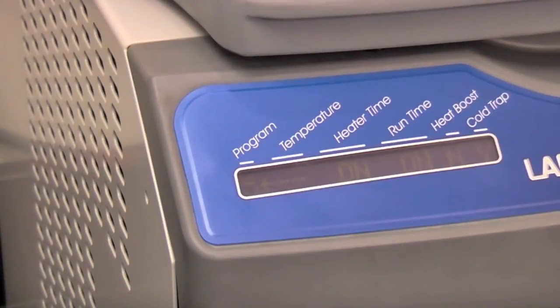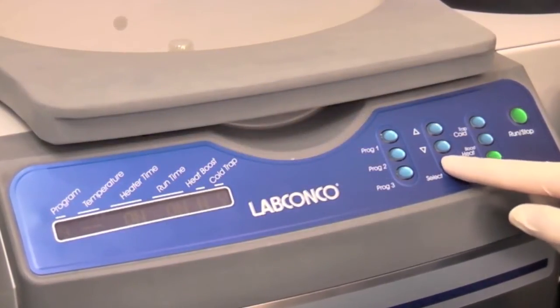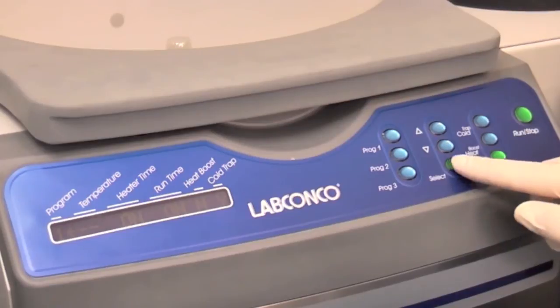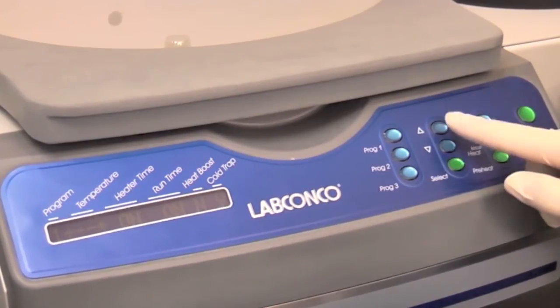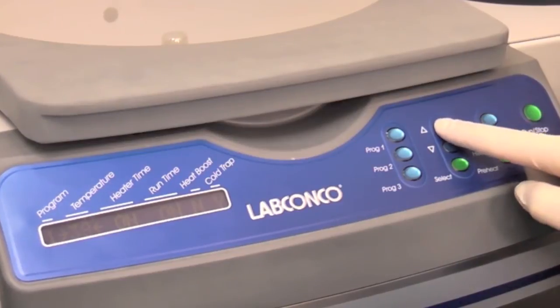Nine user set programs are available. An example program follows. Press select until the arrow is pointing to programs and choose program 1. Press select. The arrows will move to temperature. Set the temperature to 45 degrees Celsius.